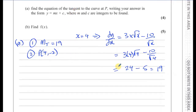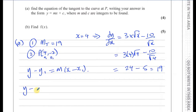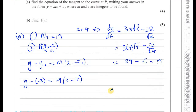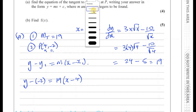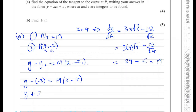It's asked for the tangent, not the normal — if it were the normal, we'd use minus 1 over 19. We have the gradient and the point, so we use the formula y minus y1 equals m times x minus x1. With x1 = 4, y1 = -2, and m = 19: y minus minus 2 equals 19 times x minus 4. Expanding: y plus 2 equals 19x minus 76, so subtracting 2 from both sides gives y equals 19x minus 78.